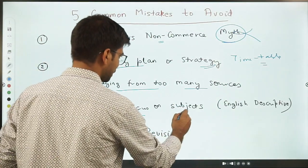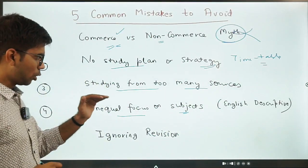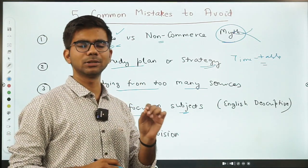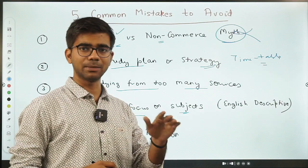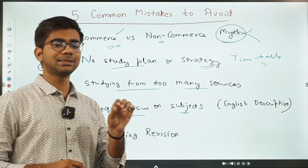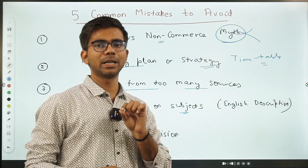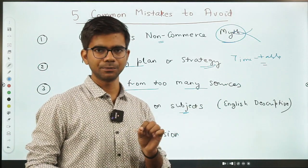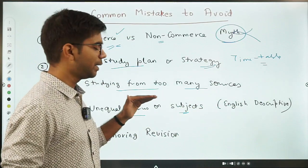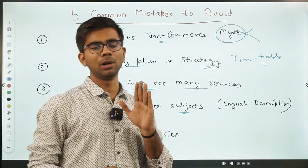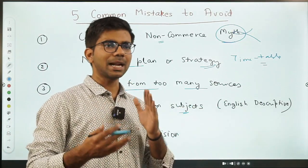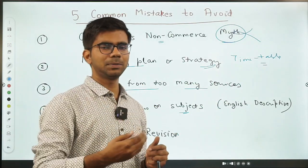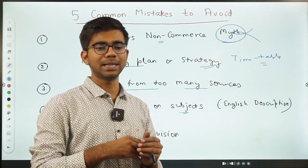The next mistake is unequal focus on subjects. Paper two has six subjects: commerce and accountancy, costing, companies act, economics, finance, and management. All subjects have equal weightage. If you analyze past year papers from 2020 or 2022, you will find that SEBI has given equal weightage to all six subjects. But candidates tend to think one subject is less important — that is not the case.